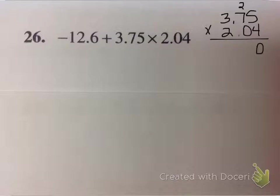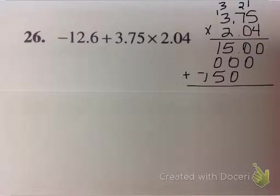4 times 5 is 20, 4 times 7 is 28 plus 2, 4 times 3 is 12 plus 3. I've got my 0's, 0 times 5, 0 times 7, 0 times 3, now going with my 2's, 2 times 5 is 10, 2 times 7 is 14 plus 1 is 15, and 2 times 3 is 6 plus 1 is 7. So let's go ahead and do my addition. How many decimal places are in my problem? I have 1, 2, 3, 4, which means I need to have 1, 2, 3, 4 decimal places in my answer, which gives me a final answer of 7.65.